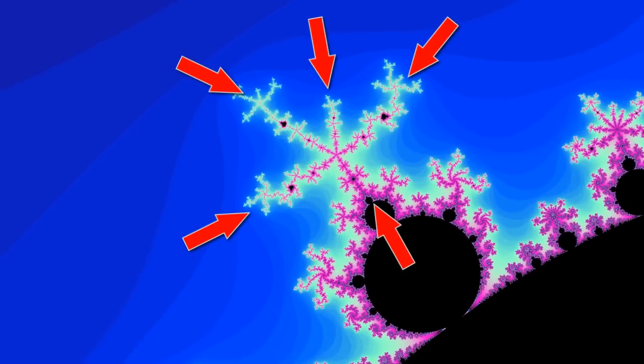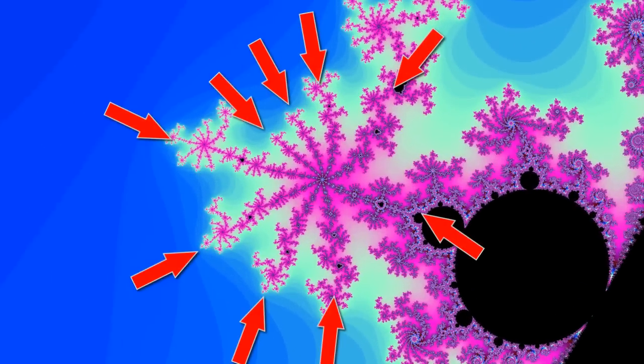Check it out. We zoom in here and find some 5-fold symmetry. And next to it, 7-fold symmetry. Then 9-fold symmetry. Then 11, then 13.